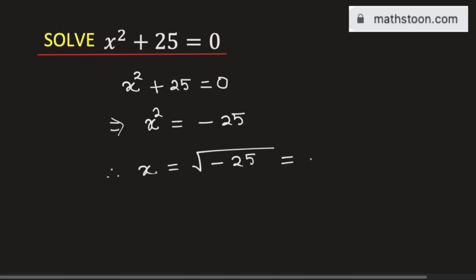Which can be written as square root of 25 times minus 1. Now using the rule of square root of a times b is equal to square root of a times square root of b.